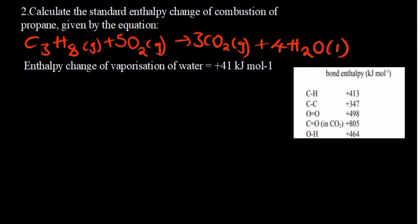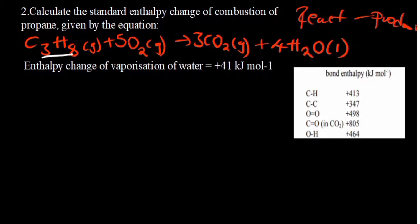The question says: calculate the standard enthalpy change of combustion of propane, given by the equation. So first, come up with the formula: reactants minus products. The reactants include C3H8. The Lewis structure has carbon to carbon to carbon — three carbons — and then eight hydrogens: one, two, three, four, five, six, seven, eight. If you don't know how to draw Lewis structures, check out the video on Lewis structures.